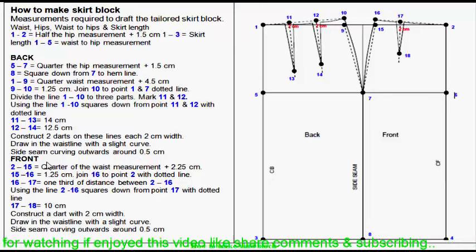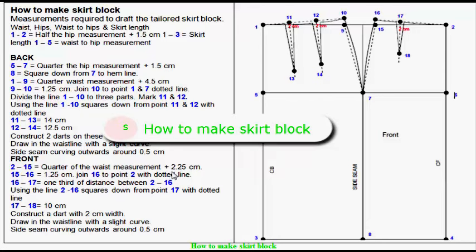Now front: 2-15 equals quarter of the waist measurement plus 2.25 cm.